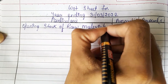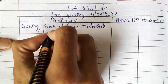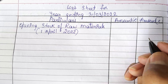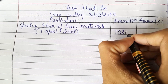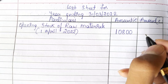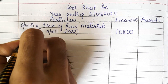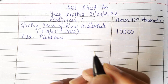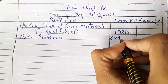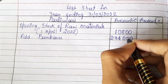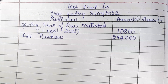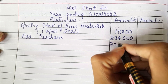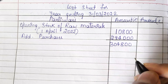Opening stock of raw materials is on 1st April 2022. Now we need to add 10,800. For this, we need to add any purchases if there are any. Purchases during the year is 2,94,000. When you add these two, we will get 3,04,800.